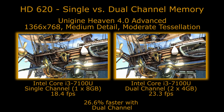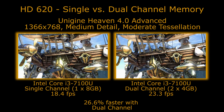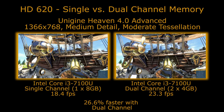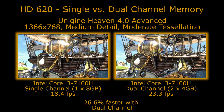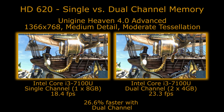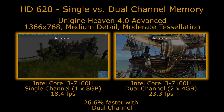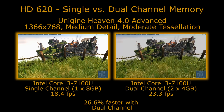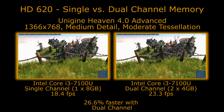With the test as we've run it, we see the frame rate increases from 18.4 frames per second with the single channel memory to 23.3 with dual channel memory. That equates to 26.6 percent faster with dual channel, which is quite a nice improvement in performance to have.